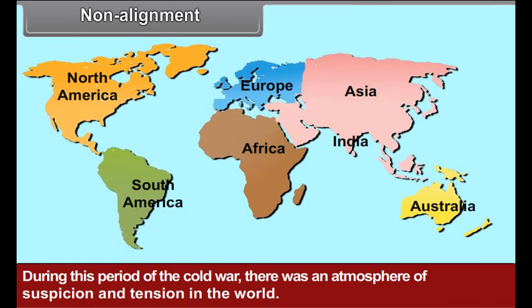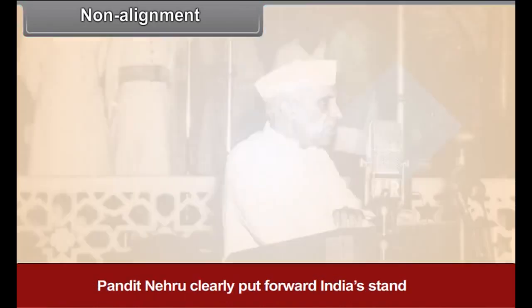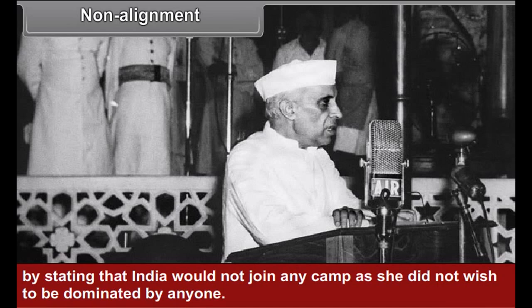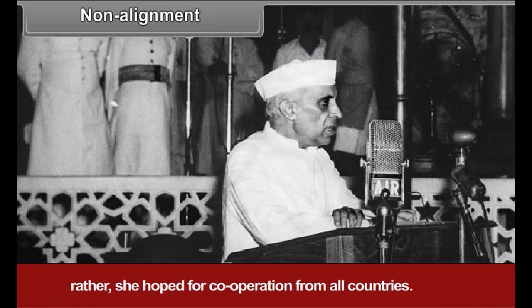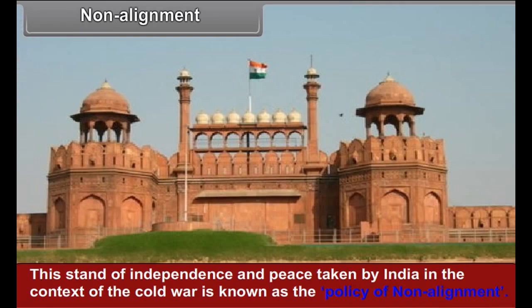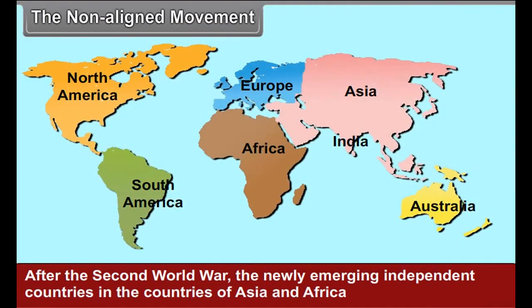Non-alignment: Non-alignment does not mean being neutral or indifferent. India's foreign policy is not non-aligned in this negative sense. After the Second World War, the Soviet Union and the United States of America emerged as the two superpowers. The tense relations between them are referred to as the Cold War. During this period, there was an atmosphere of suspicion and tension in the world, and both superpowers were trying to pull the newly emerging independent countries into their camps.